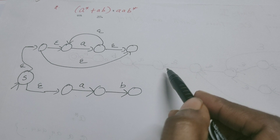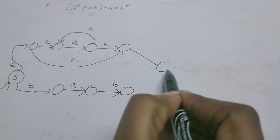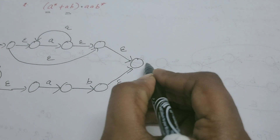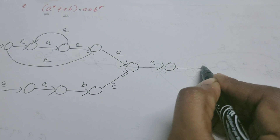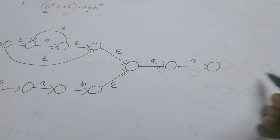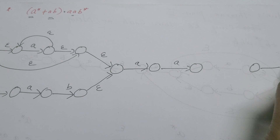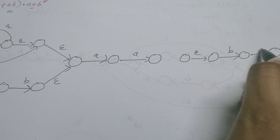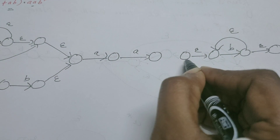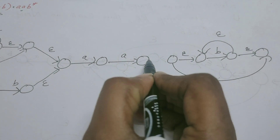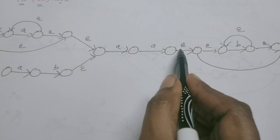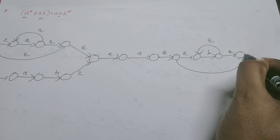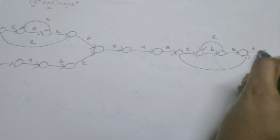Now this must be further followed by aab*. I take one common state where these two machines are ending, and from there I continue to draw aab*. This is the machine for the first a, and this is the machine for the second a — so we have drawn aa. Now I construct the machine for b*: draw the machine for b and convert it into b* as done earlier. These parts can be concatenated via epsilon transitions. The final state is this state, or you can add a new final state connected via epsilon.